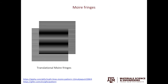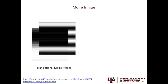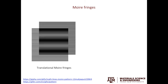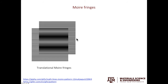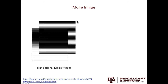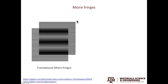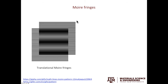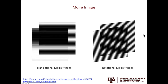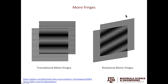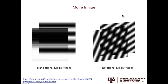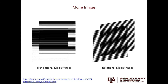There are two types of moiré fringes. The first type is called translational moiré fringes. You can see if you move one set of lattice planes up, the moiré fringes are also moving up. Notice that the spacing of the moiré fringes does not change in this case. The second type is called rotational moiré fringes. As the angle changes, you can see the direction and the spacing of the fringes will change.